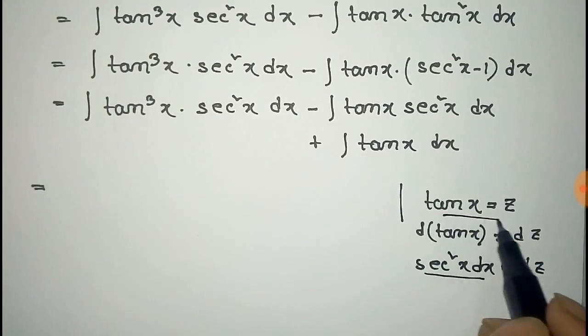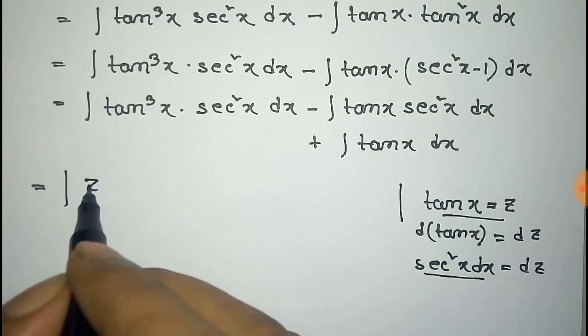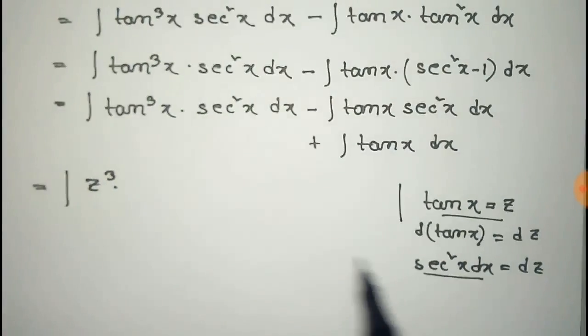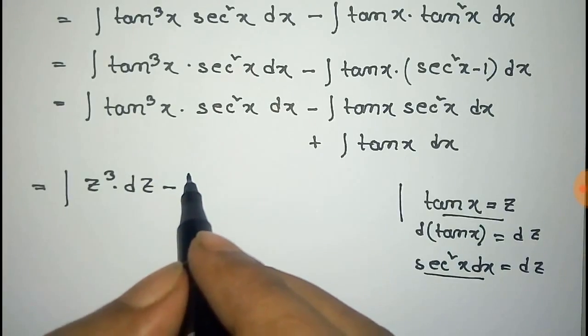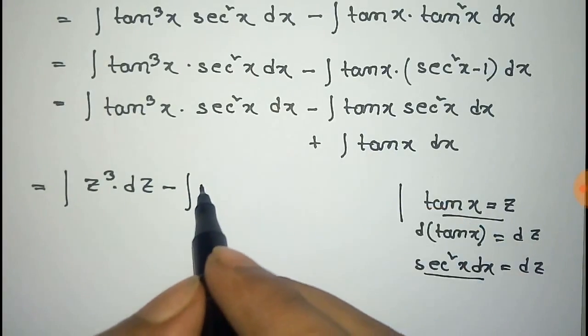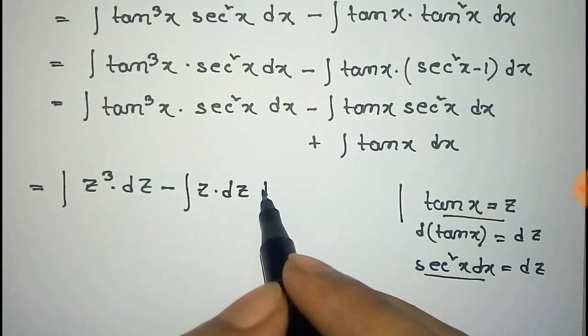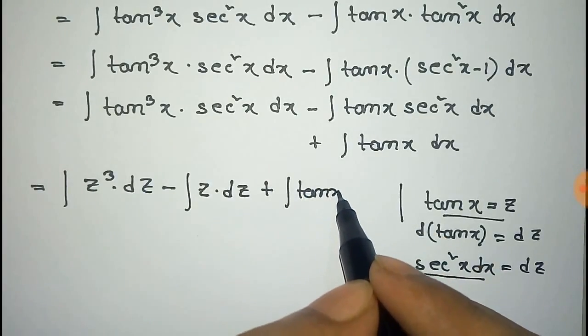So now we have to put this condition on this integration. It will be z cube into dz, that is dz, minus z that is tan x z into dz, plus this will be the same tan x dx.